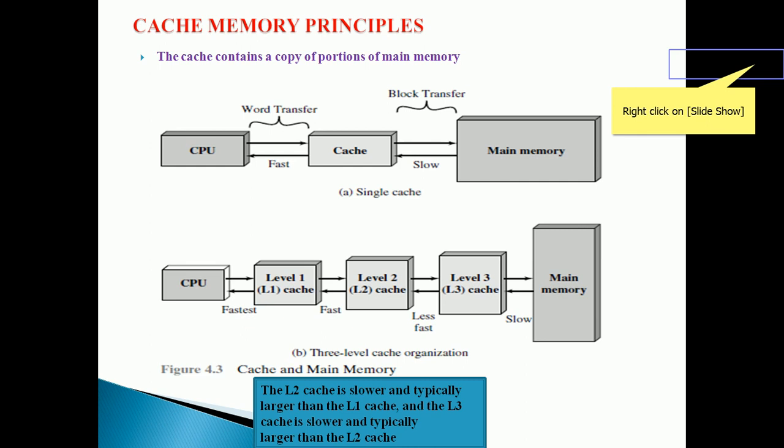If we are having three different levels of caches, the L2 cache is slower and typically larger than the L1 cache, and the L3 cache is slower and typically larger than the L2 cache.